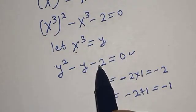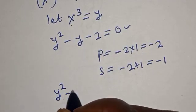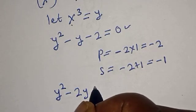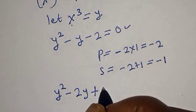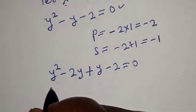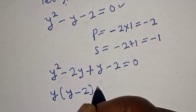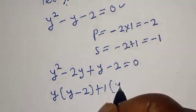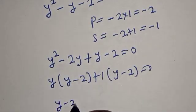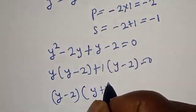The sum is equal to minus 2 plus 1, which equals minus 1. So the sum is minus 1 and the product is minus 2. Substituting, we have y squared minus 2y plus y minus 2 equals 0. Then: y bracket y minus 2, plus 1 bracket y minus 2, equals 0.